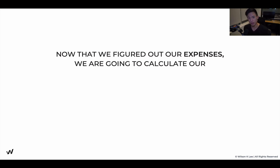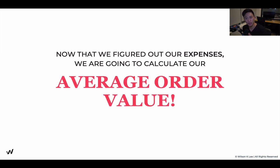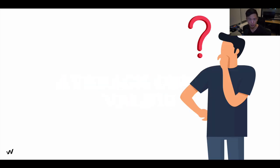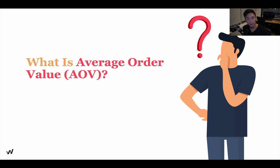Now that we've figured out all the expenses — we talked about fixed expense, variable expense, projections, seating, and so on — we're going to use everything that we have done to calculate the average order value, the AOV.